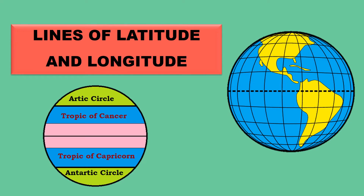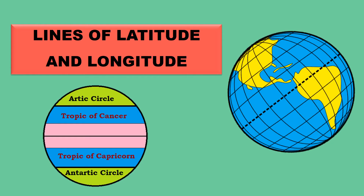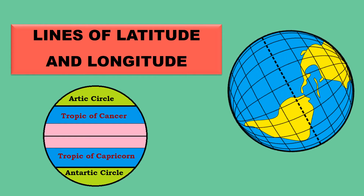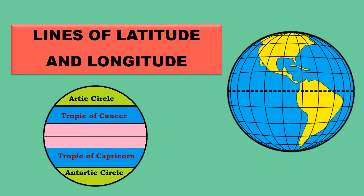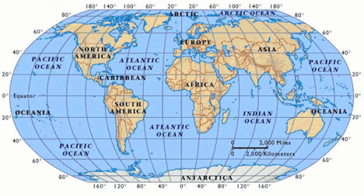Hello everyone. Welcome to another video. Today, we'll be looking at lines of latitude and longitude. Lines of latitude and longitude are imaginary lines on Earth. On a map, these lines help us to describe and locate places on Earth.